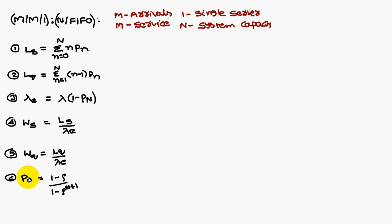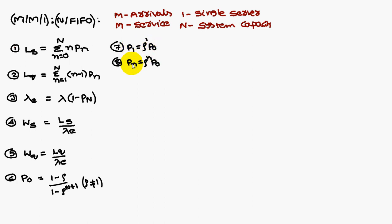P(0), the probability of zero customers in the system, is (1 minus rho) divided by (1 minus rho to the power N+1). P(1), the probability that one customer is in the system, equals rho to the power 1 into P(0). P(n), the probability that there are n customers in the system, equals rho to the power n into P(0). The probability that there is no queue is P(0) plus P(1), since P(0) means no one in the queue and P(1) means one member in the system being treated.